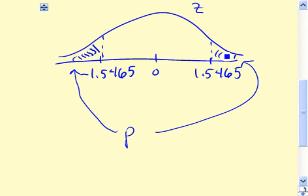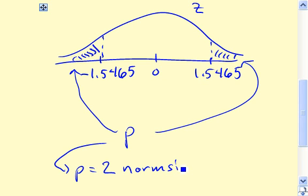Well, the distribution is symmetric, so if we just have the area in the lower tail, then we can just double it. So p is equal to twice normsdist of minus 1.5465, which gives 0.1212.